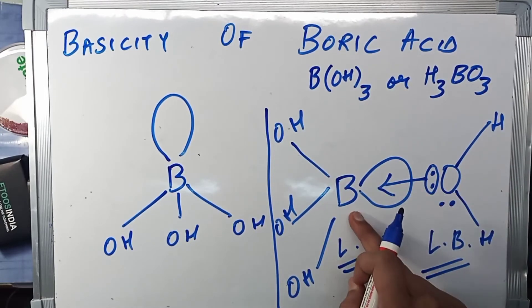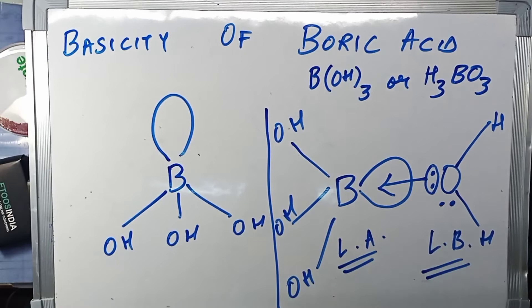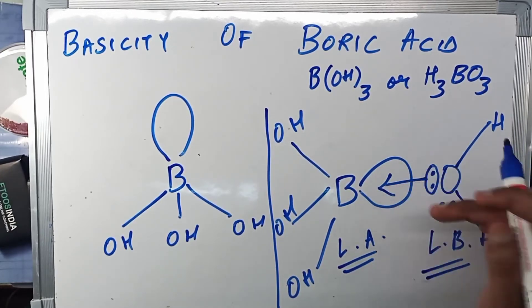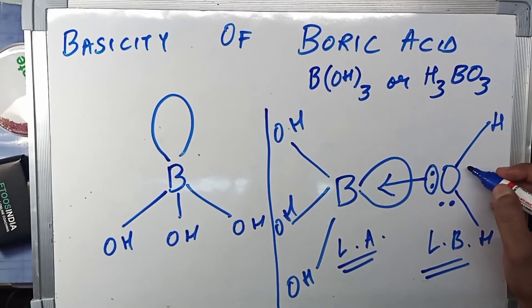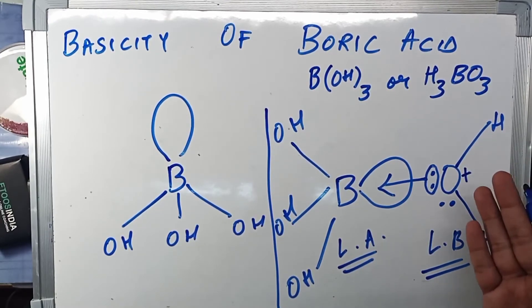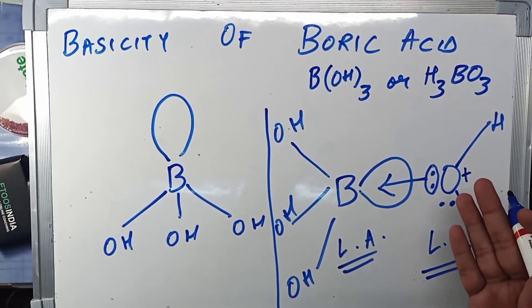So what actually happens is oxygen donates its two electrons, or a single lone pair, to boron's vacant orbital and they form a coordinate bond. But when oxygen donates its lone pair to boron, it gains a positive charge. Now oxygen is a very highly electronegative element.